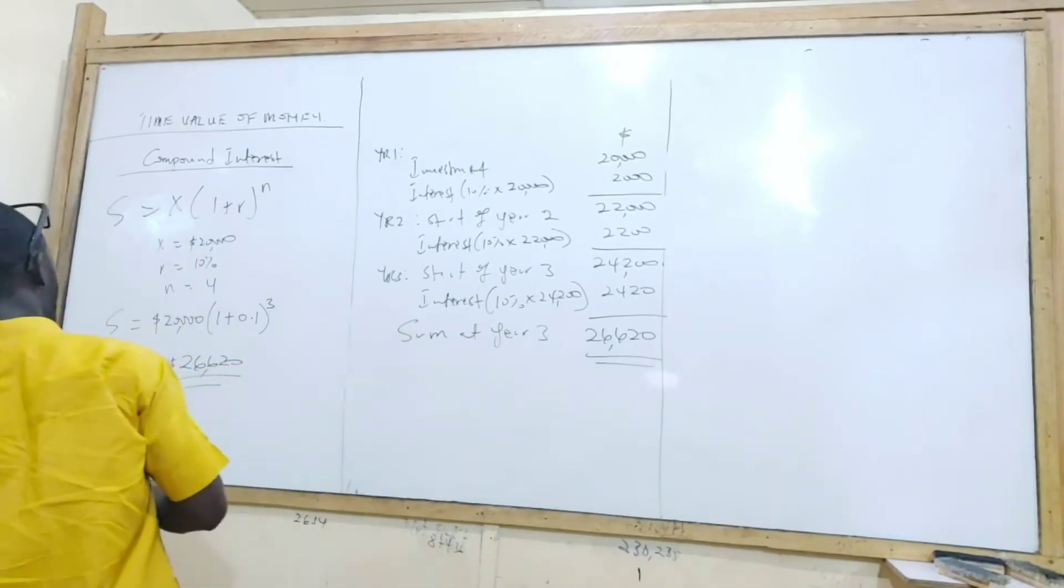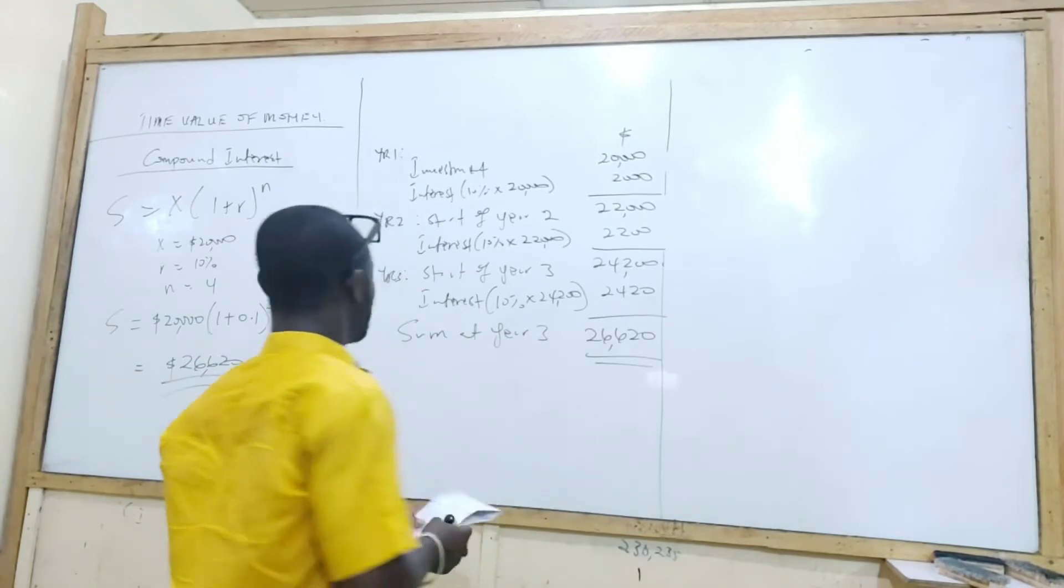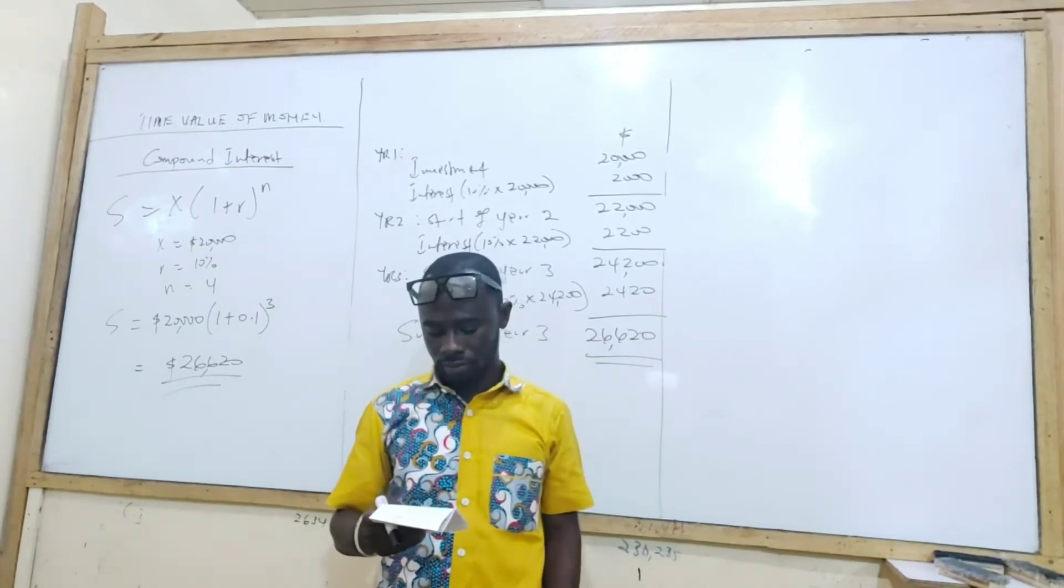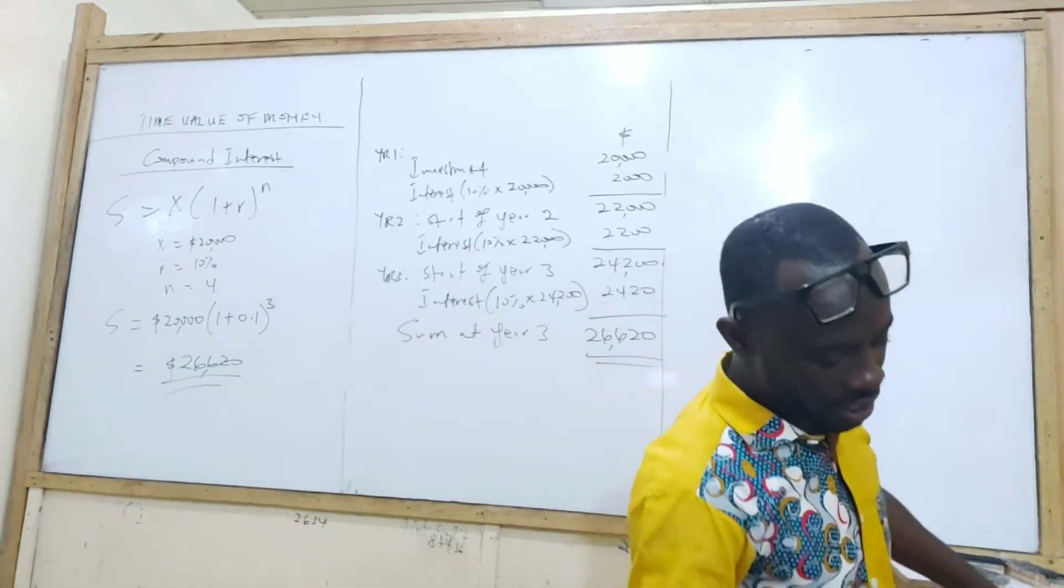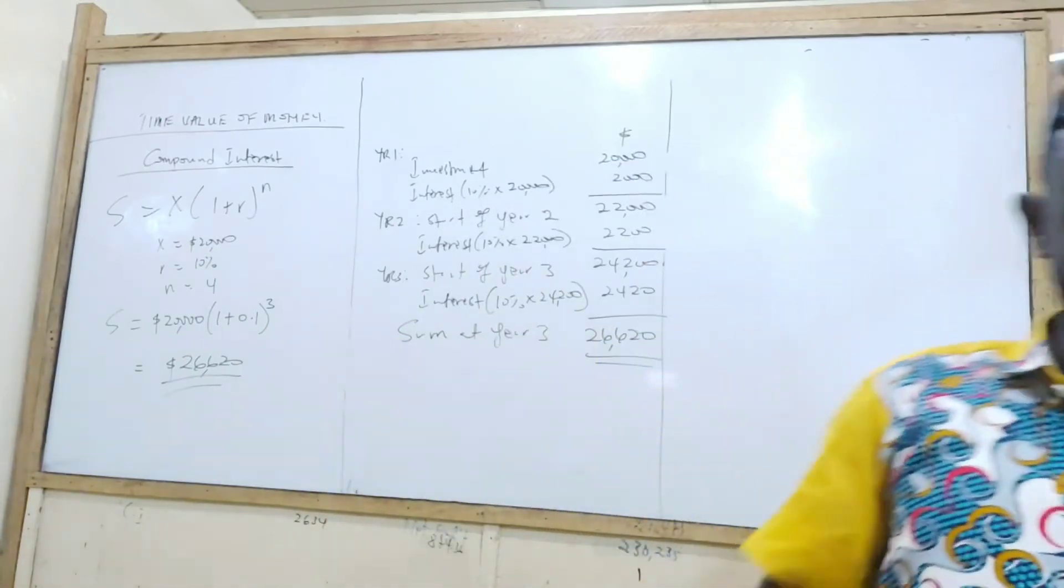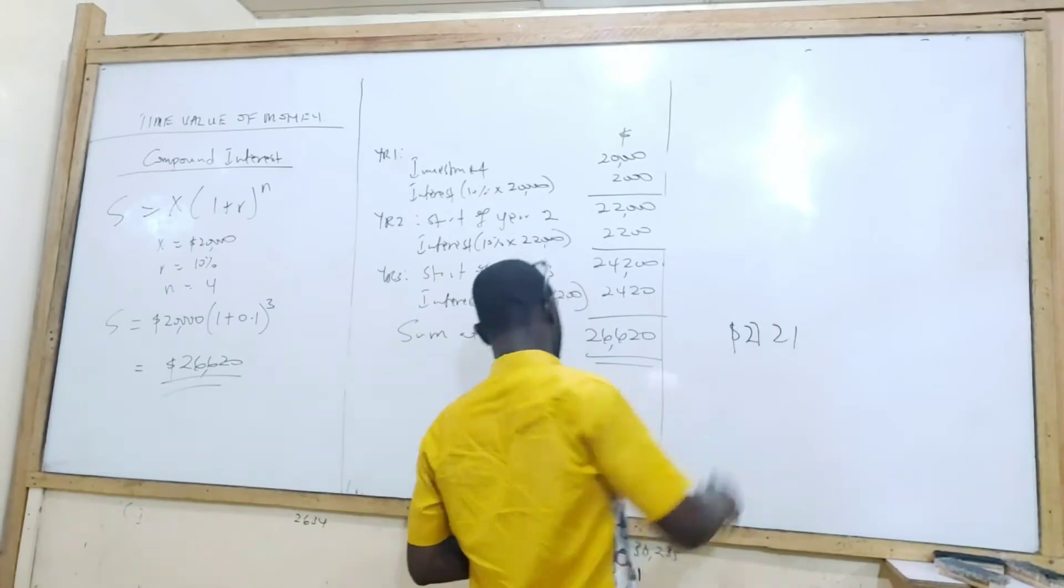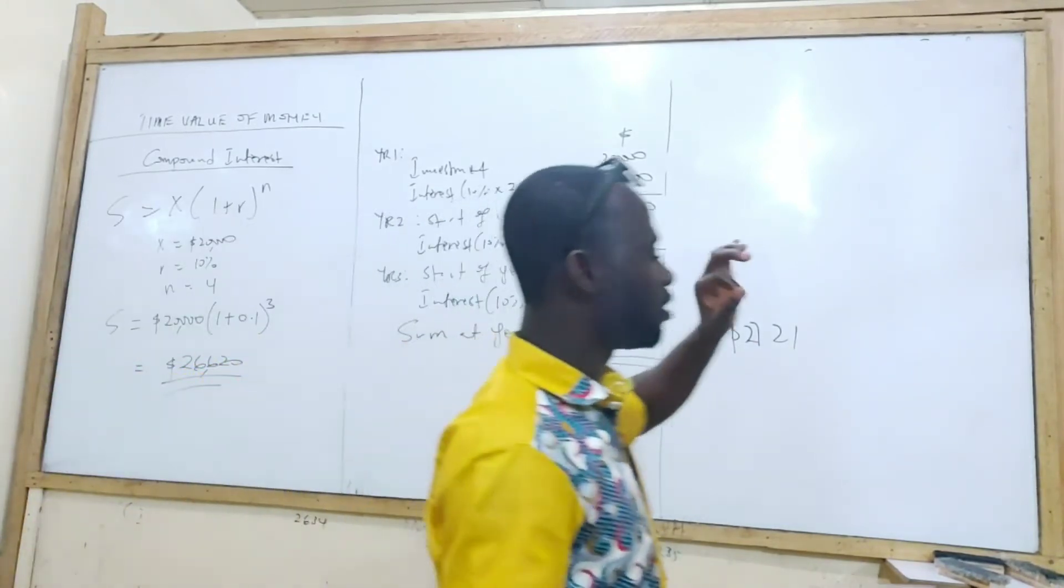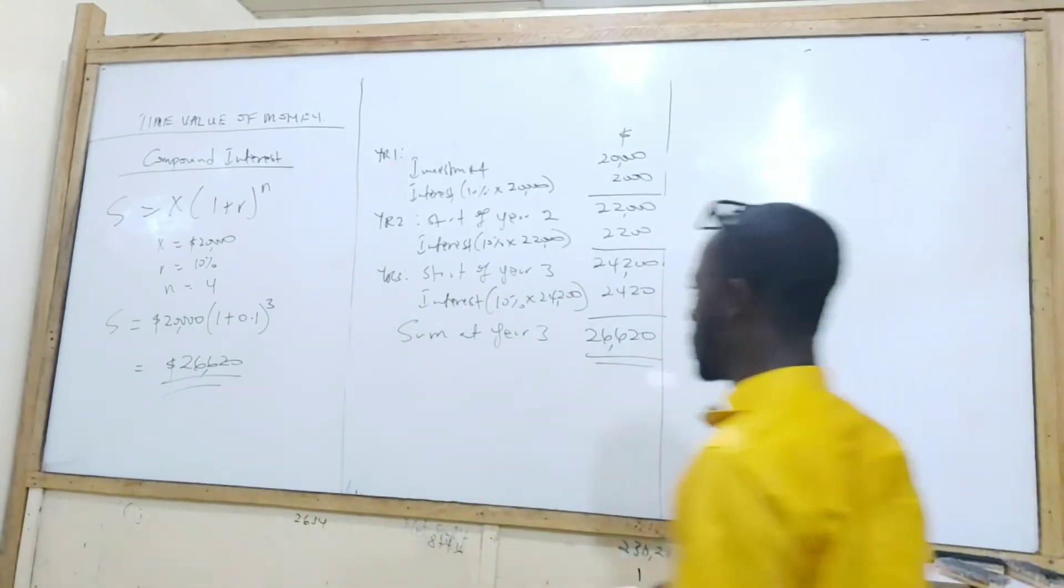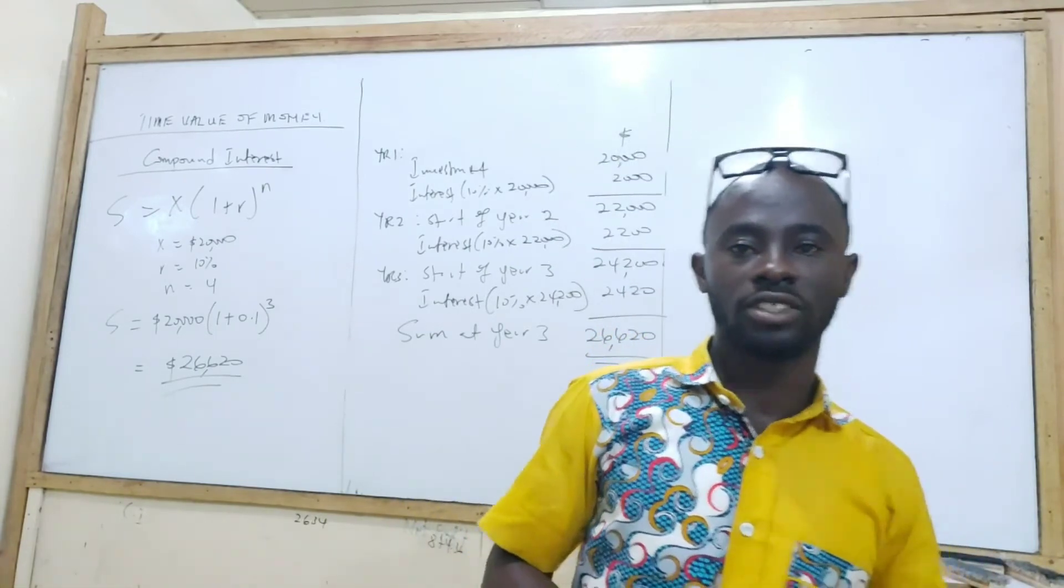Under compound interest also, we could be asked to calculate how long it takes for us to earn some money. So let's look at another question. Question two. Write it down. At what annual rate of compounded interest will $2,000 grow to $2,721 after four years? So in this question, what are you finding? The interest rate. So try your hands on it and let me see what you can do.